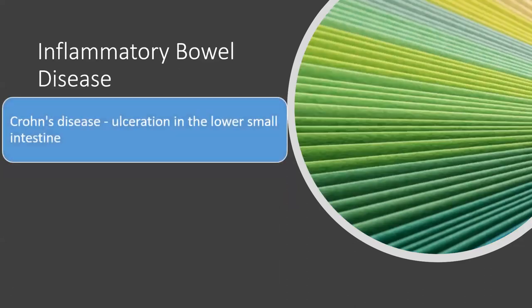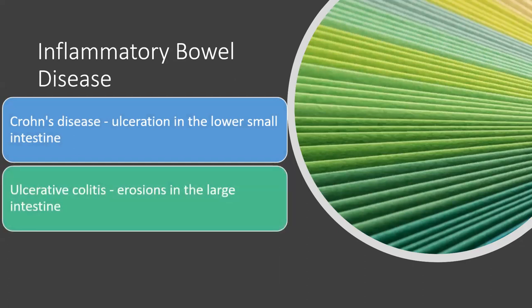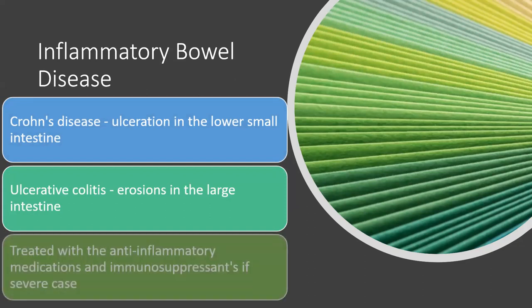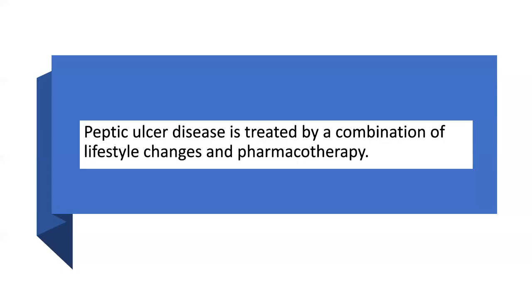Inflammatory bowel disease includes Crohn's disease, which involves ulceration in the small intestine, and ulcerative colitis (UC), which is erosion in the large intestine. These are IBS-related disorders of the small and large intestine. They are treated with anti-inflammatory medications and some immunosuppressants, but only in severe cases.